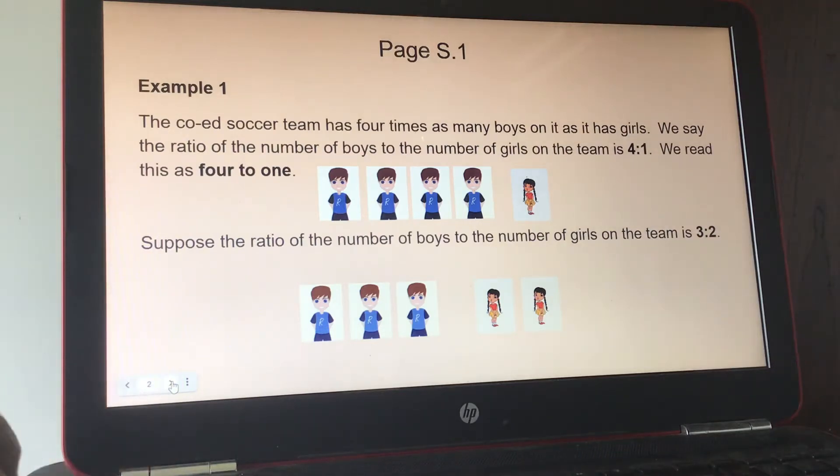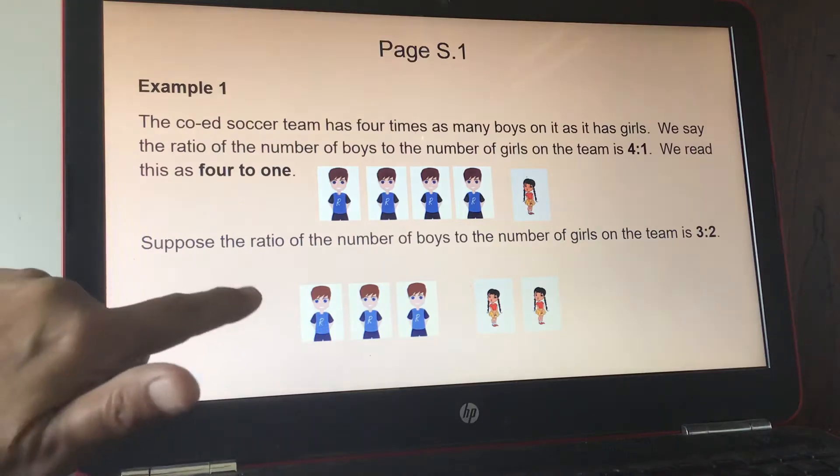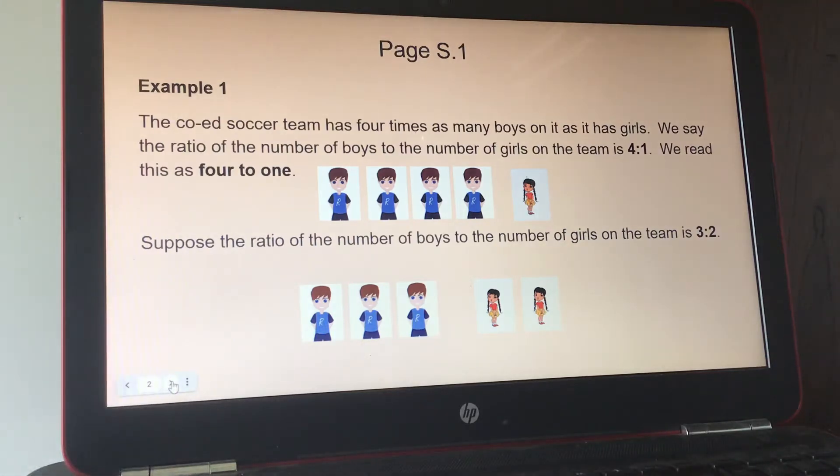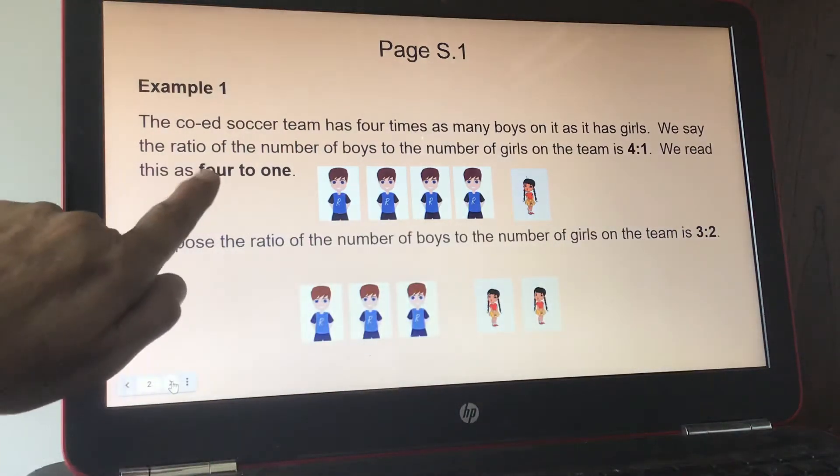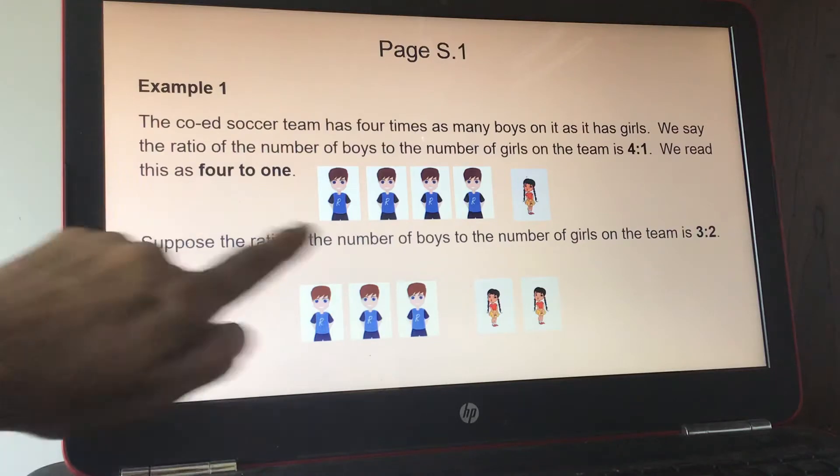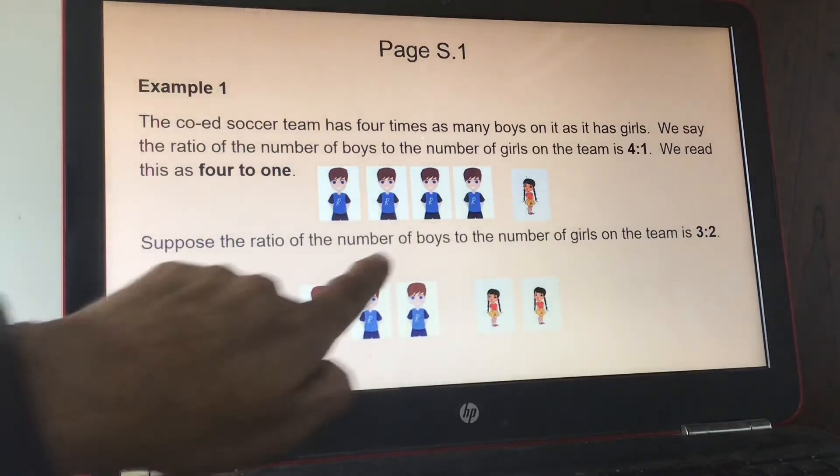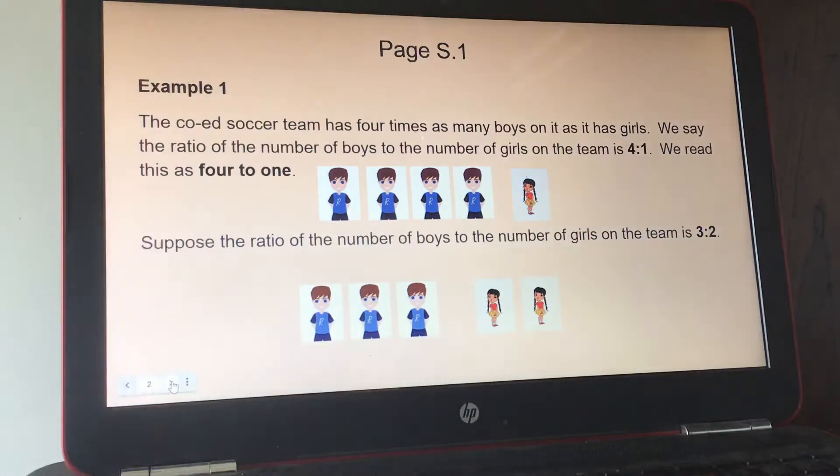And suppose the ratio of the number of boys to the number of girls on the team is 3 to 2. You could write it this way and you can also write the number. So for this one it would be 3 to 1 with the word 2 in it.